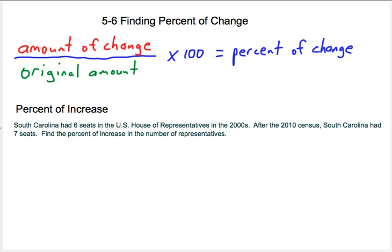There's a lot of applications for using percent of change, and I'm going to talk about a few here. So we have our first problem. South Carolina had six seats in the U.S. House of Representatives in the 2000s. After the 2010 census, South Carolina had seven seats. Find the percent of increase in the number of representatives.